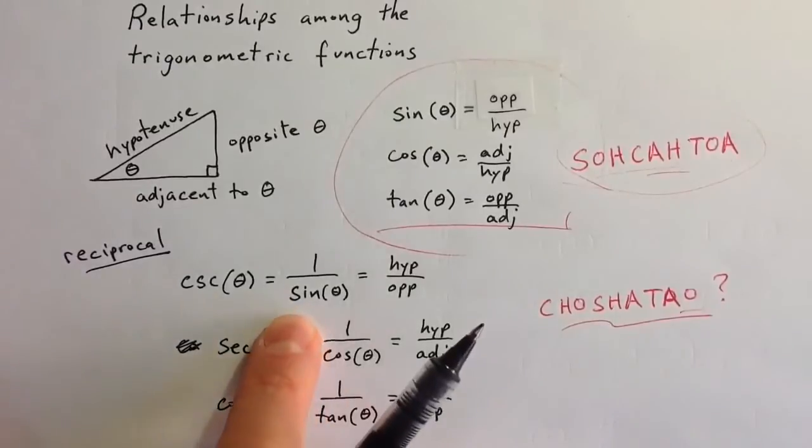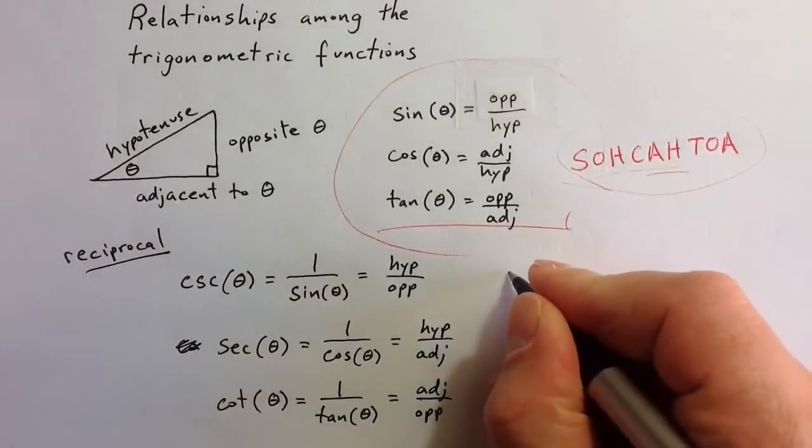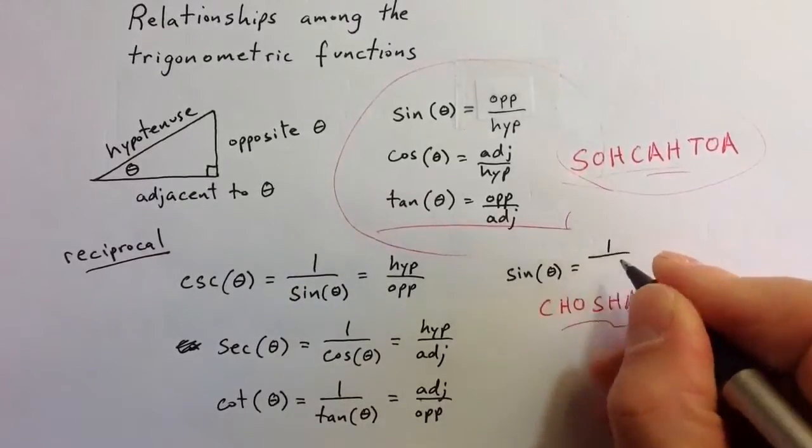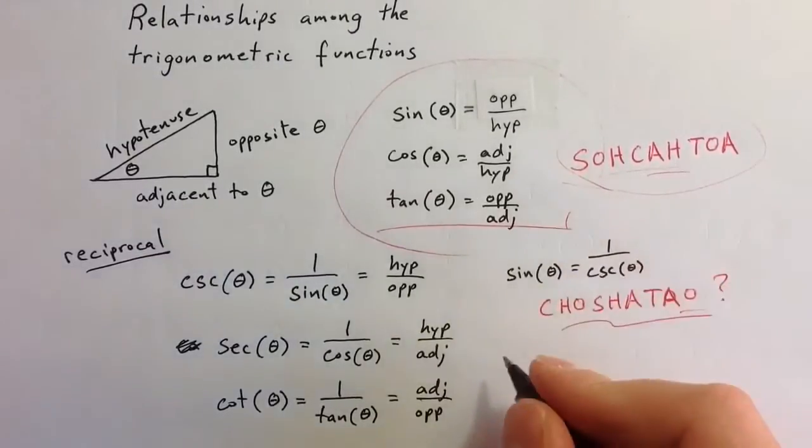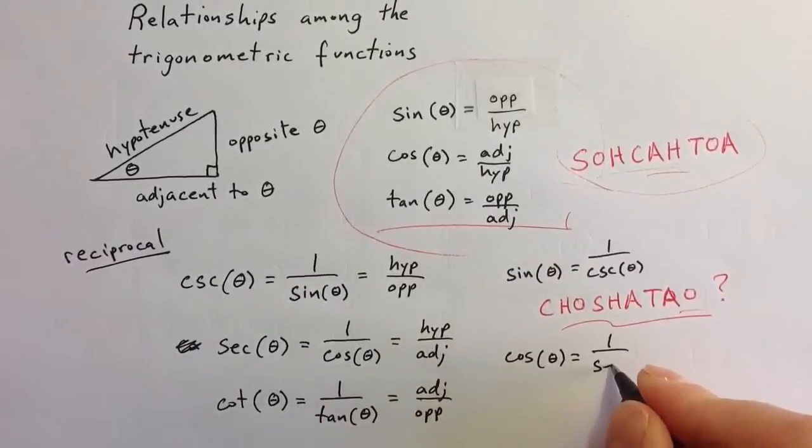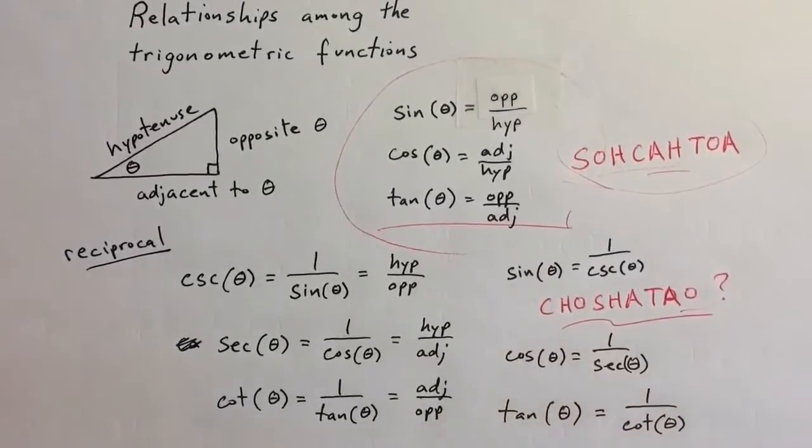We can think of these reciprocals in the other way as well. I can think of sine of theta as the reciprocal of cosecant, cosine of theta as the reciprocal of secant, and tangent as the reciprocal of cotangent. So the reciprocal relationship goes in both directions.